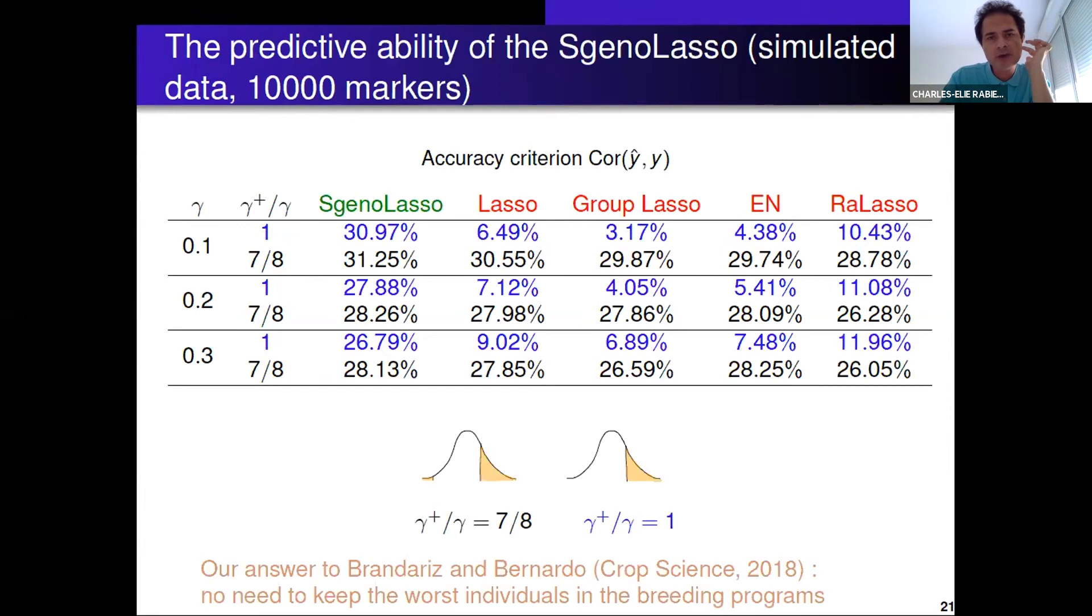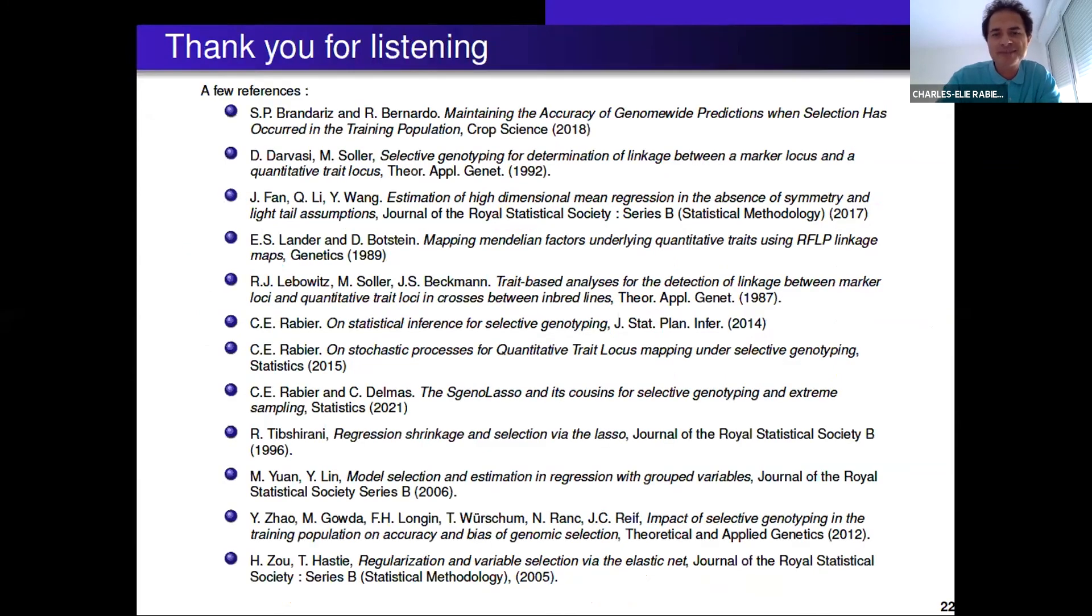When we genotype only at one tail it didn't work because we suppose there was a lack of signal in the data. A last slide just to show you how it works on the predictions. The criteria is correlation between predicted values and true values. It's still the same. If you keep only the best individuals in your learning model, you can see that SG no lasso has a correlation accuracy of 30 percent and other methods are five percent. As soon as you include a few worst individuals in your model, all the methods behave the same way. We believe that we do not have to keep the worst individuals in our breeding programs. That's it, thank you for your attention.